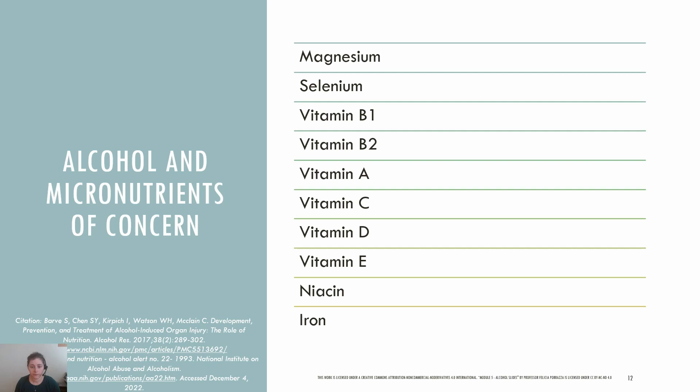There are many nutrients of concern with alcohol use disorder. Alcohol can lead to not only more nutrients being lost in the urine, but poor absorption and storage of micronutrients. Alcohol inhibits fat absorption and impairs absorption of the fat-soluble vitamins A, E, D, and K. Vitamin A deficiency can be associated with night blindness, and vitamin D deficiency is associated with softening of the bones. Magnesium deficiency can be due to decreased intake and increased urinary excretion, and can result in insulin resistance and muscle cramps. Selenium deficiency can lead to cardiomyopathy.